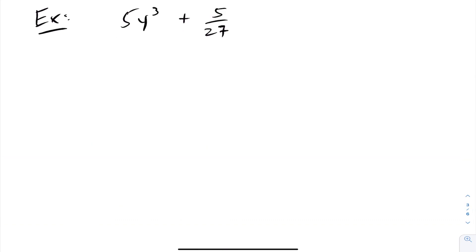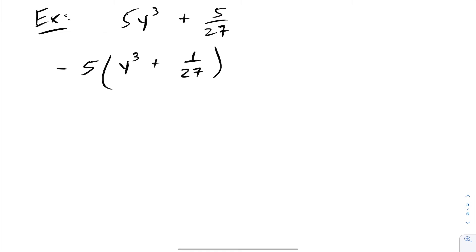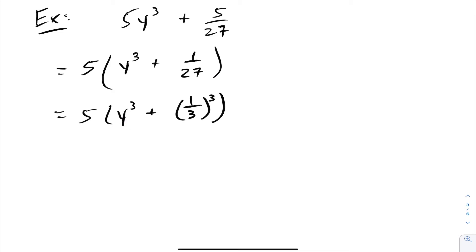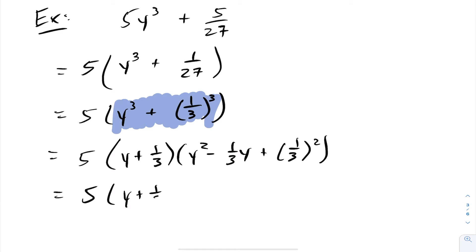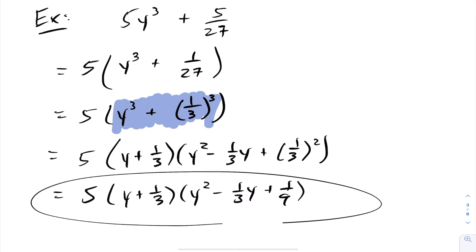Let's try another. The same idea applies here — we do a GCF first. Since 5 can't be expressed as a power of 3, we factor out a 5, giving 5 times y cubed plus 1 over 27. Now, y is already a power of 3, and 1 over 27 can be rewritten as 1 third to the power of 3. Now we have a sum of cubes: 5 times y plus 1 third, times y squared minus one-third y plus 1 third squared. This simplifies to 5 times y plus 1 third, times y squared minus one-third y plus 1 ninth. Now we are fully factored.